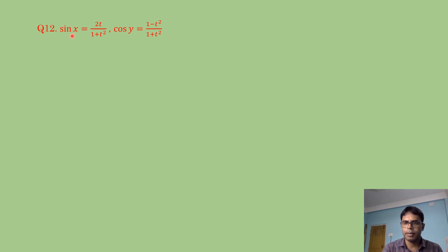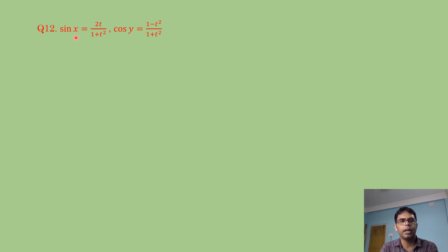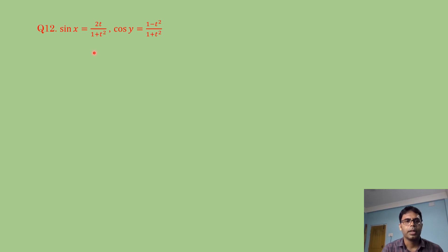In general, parametric functions give x as a function of t and y as a function of t. Here sin x is given as a function of t and cos y is given as a function of t. We can write x = sin⁻¹(2t/(1+t²)), which is a valid inverse trigonometric function.